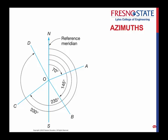Now I'm going to talk about azimuths. Azimuths are wonderful, and they're a great way to make measurements. What they are: they're horizontal angles observed from any reference meridian. In this case, I'm calling this north — that is my reference meridian, my reference line. Any angle that's measured off of that is going to be considered an azimuth.